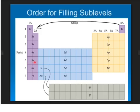Then 4p, then 5s, then 4d, then 5p, then 6s, and then we go down here to the f block.